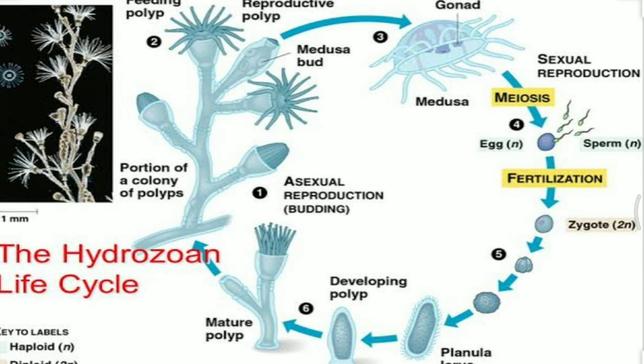The hydra form is the polyp form, and the medusa form is the Obelia form. From the medusa, the release of gametes takes place. Sexual reproduction occurs for a very small period of time, whereas the diploid form is persistent throughout the life cycle.